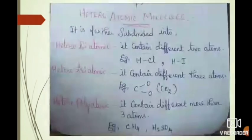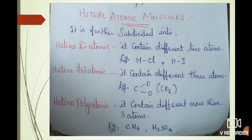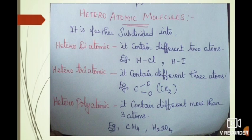Based on atomicity, heteroatomic molecules are again subdivided into hetero-diatomic, hetero-triatomic, and hetero-polyatomic molecules. Hetero-diatomic molecules contain two different kinds of atoms — for example, hydrogen chloride and hydrogen iodide. In hydrogen chloride, hydrogen is one kind of atom and chloride is another kind of atom, so it is a hetero-diatomic molecule.